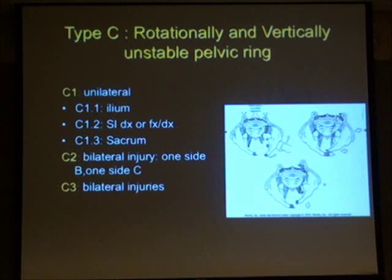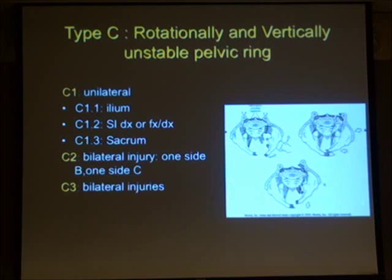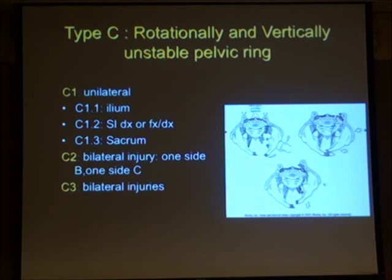Type C fractures represent higher energy, higher severity injuries at the other end of the spectrum — both rotationally and vertically unstable. The front, middle, and back are all disrupted, and everything in between has the potential to be disrupted as well. These can be broken down into C1 (unilateral), C2 (bilateral, usually one side Type B and one side Type C), and C3 (bilateral Type C injuries).